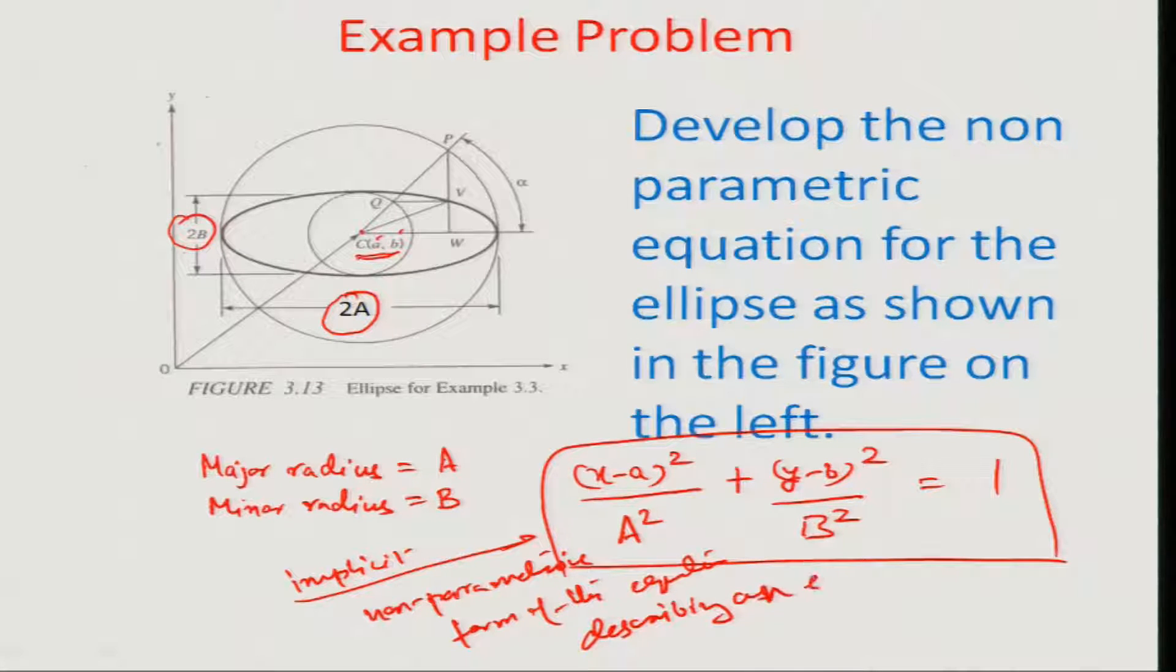This becomes then the implicit non-parametric formulation of the equation describing an ellipse. Obviously implicit because there is a clear cut relationship between x and y in terms of some knowns a, b small or a, b capital and 1, and non-parametric because again the governing relationship is directly between x and y without involving any extra parameter.